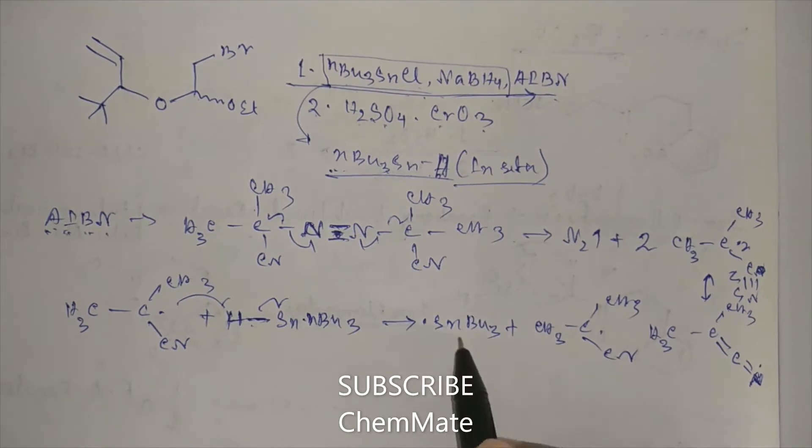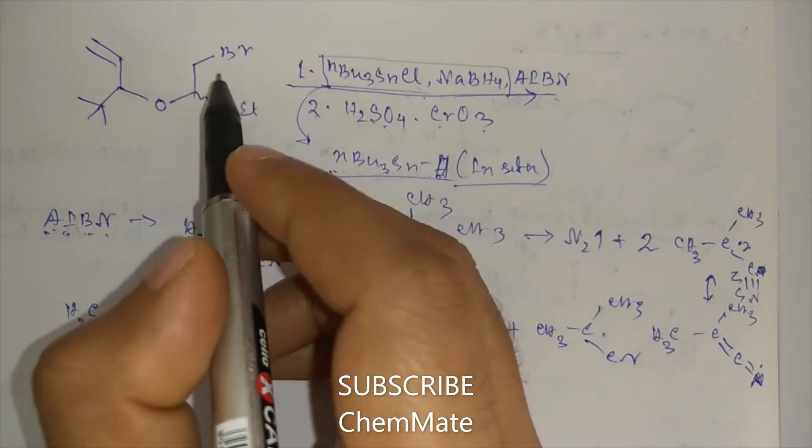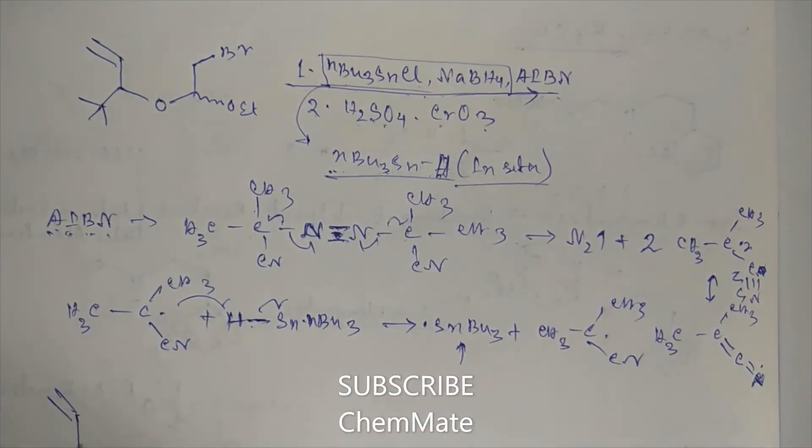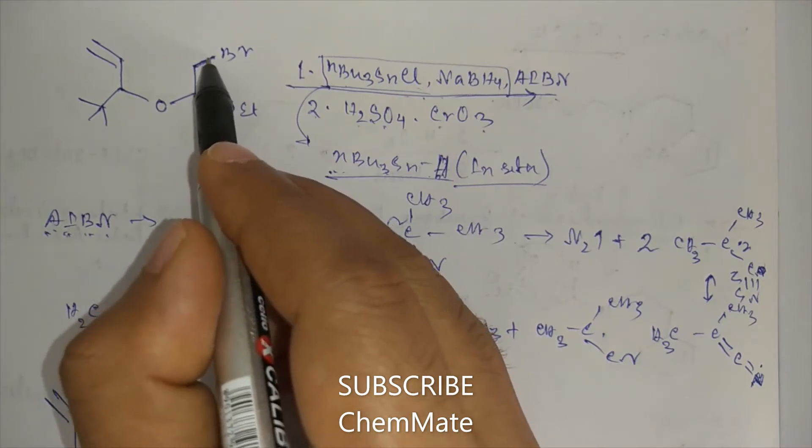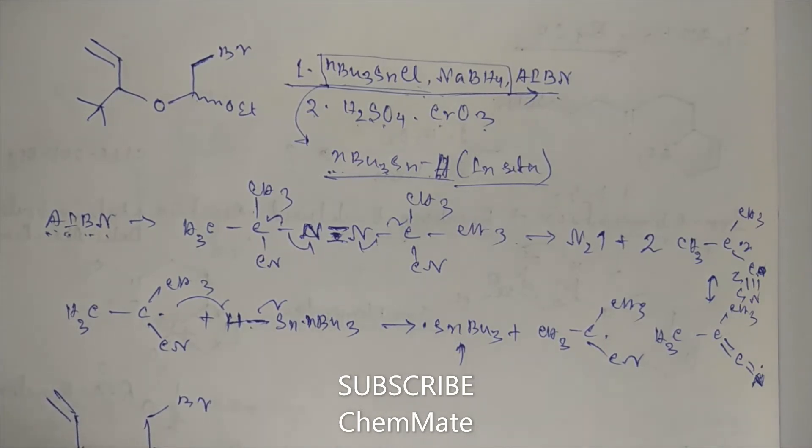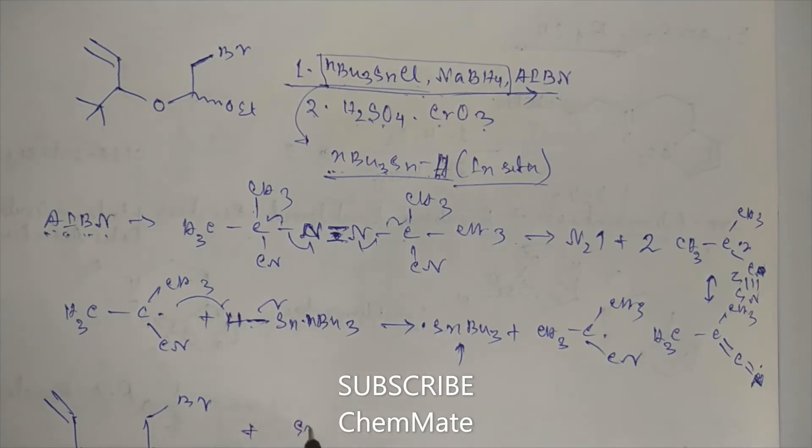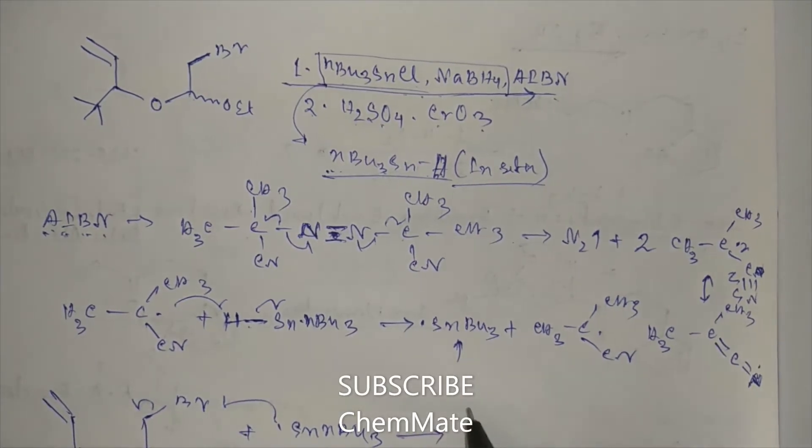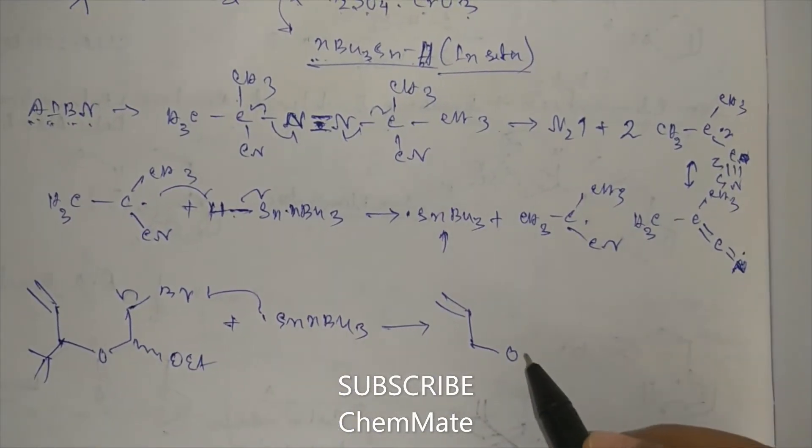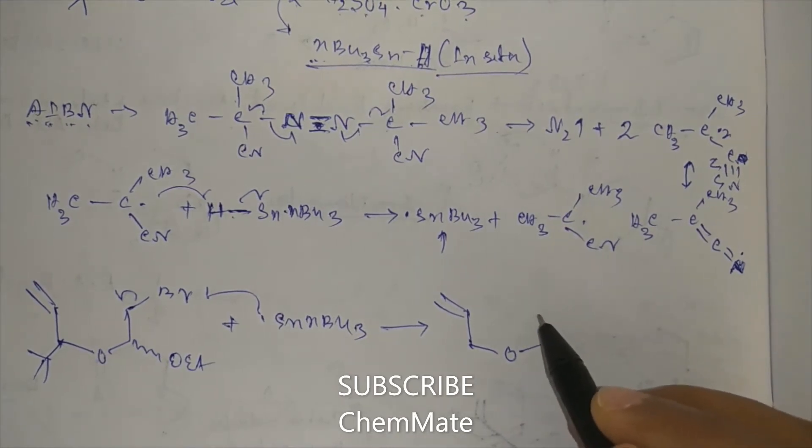Now this is a very active radical. It will react with this halide. The carbon-halogen bond will break. So it forms an SNBu3 bond. It will form another radical which is this.